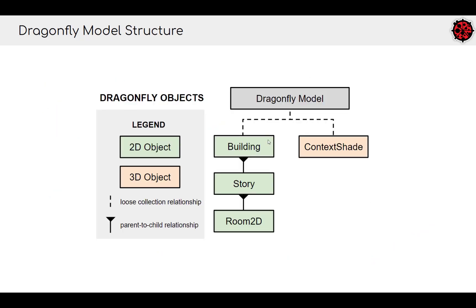Every Dragonfly model has some buildings, and it can also have context shades that shade those buildings — things like trees or parking garages that aren't necessarily participating in the energy calculation but can still block the sun. Those buildings are composed of stories, which are composed of room 2Ds, with a parent-child object relationship between these elements. Every room 2D must belong to one and only one story, and the same is true between stories and buildings.